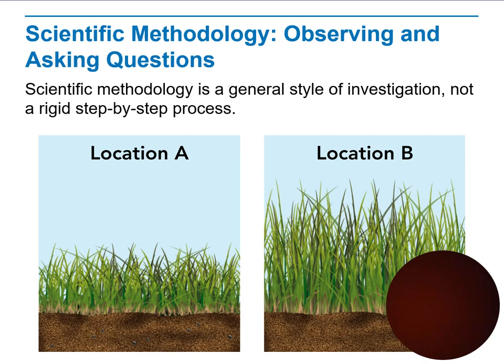When we talk about scientific methodology, we need to observe and then ask a question. We are now going through the steps of methodology. For example, we might say location A is better than location B. Scientific methodology is about generating a style of investigation — not a rigid step-by-step process. You need to investigate.